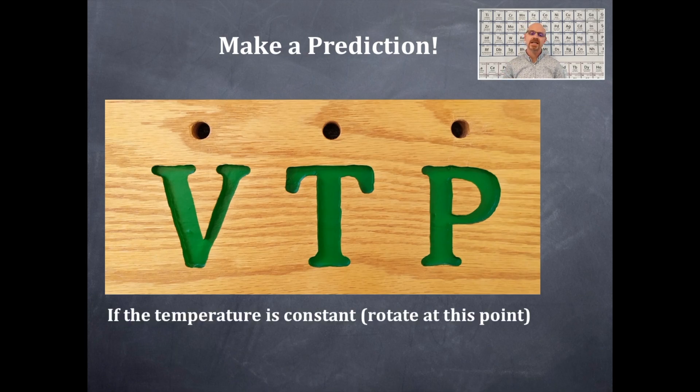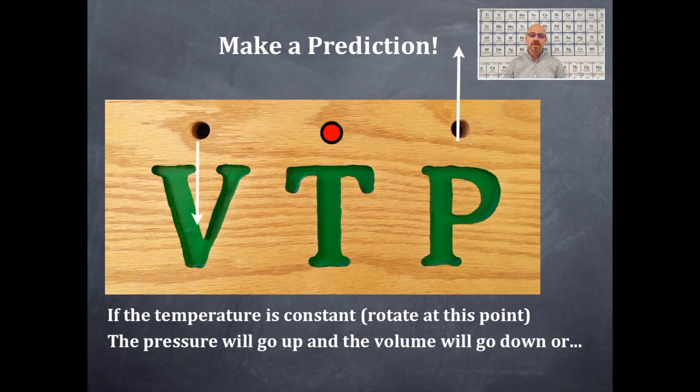If the temperature is being held constant, then you're going to rotate at this point. So imagine if you were to stick a pin or a bar right through that T where the hole is, right where this dot is. So you're going to rotate at this point. So that means if the pressure goes up, then the volume goes down. Do you see that rotation right there? The pressure will go up, the volume will go down.